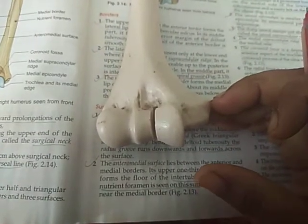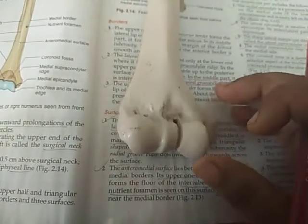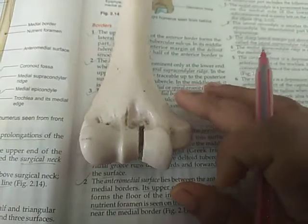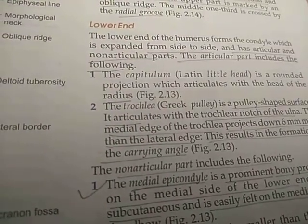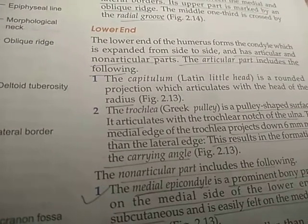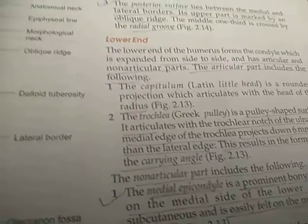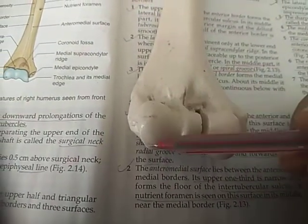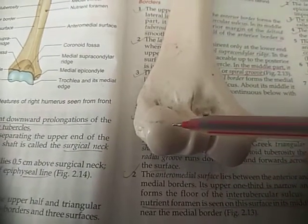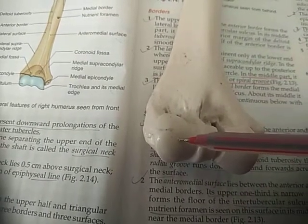We have two bones, radius and ulna. The articular part consists of two parts: capitulum and trochlea. What is capitulum? It is a rounded projection which articulates with the head of the radius. This rounded projection is situated on the lateral side and is called as capitulum, and it articulates with the head of the radius, which is on the lateral side.